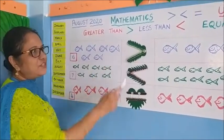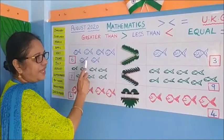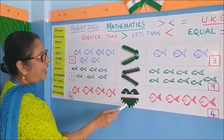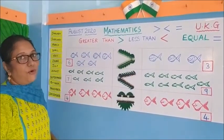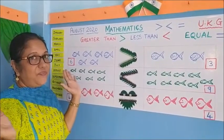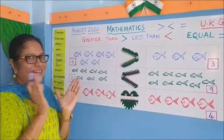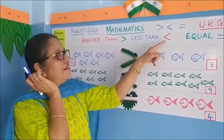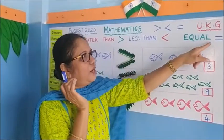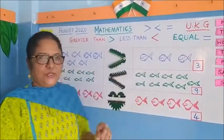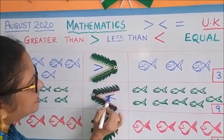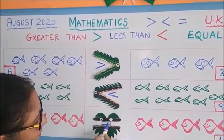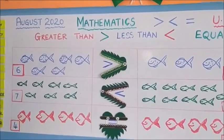Did you see the three signs? The first one is greater than, the next one is less than, and the third one is equal to. These are the three signs we are going to learn. Wherever the number is greater, the crocodile will open its mouth more to eat - that is the greater than sign. Wherever it is less, that is the less than sign. And equal to is shown when both sides are the same. So children, we have seen which is greater than sign, less than sign, and equal to.